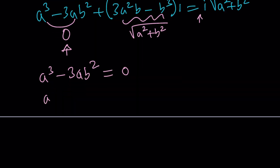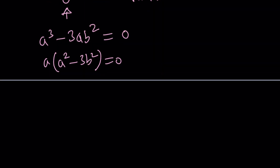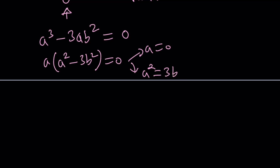We take out a and we have two cases: either a equals zero, or a squared equals 3b squared. You could split this into two cases with a plus-minus sign but that's not going to be necessary.